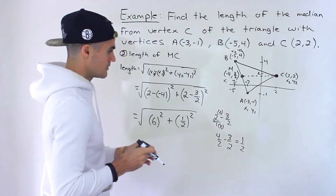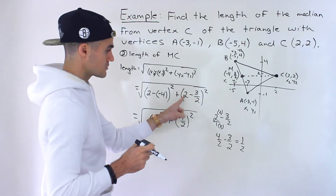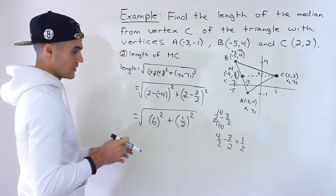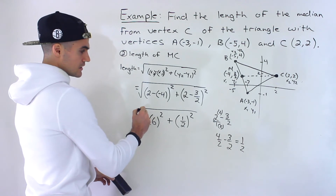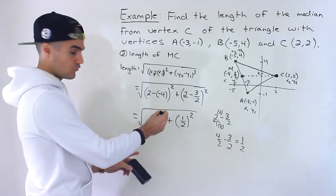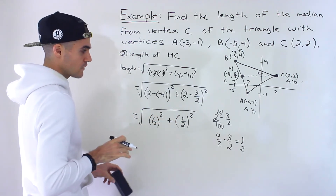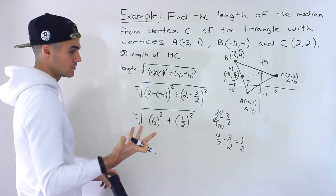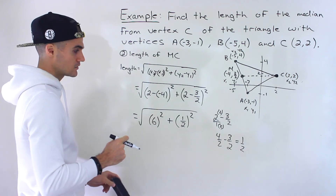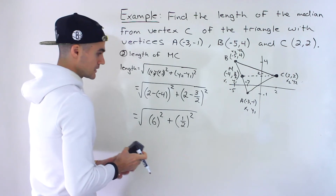1 half makes sense because 3 over 2 is like 1.5, so 2 minus 1.5 gives 0.5. But working with fractions keeps the answer in exact form, which is often what your teacher wants — you can always convert to decimals at the end with a calculator. So sticking with fractions: 6 squared gives 36, and (1 over 2) squared gives 1 over 4.